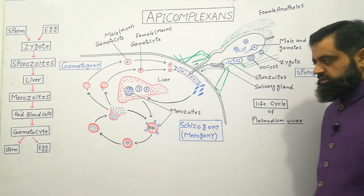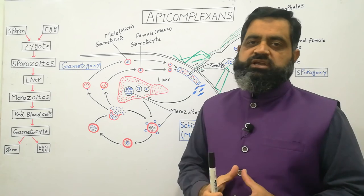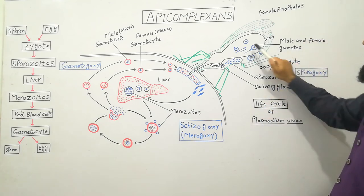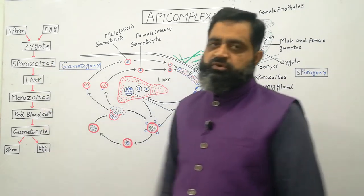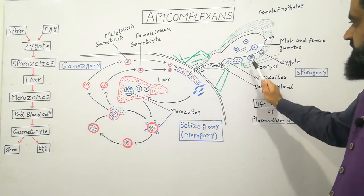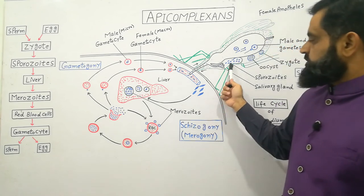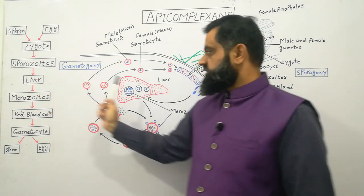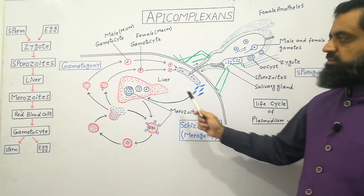To summarize the cycle: micro- and macro-gametes fuse with each other to form a zygote within the wall of the mosquito's stomach. The zygote then undergoes sporogony, during which many sporozoites are produced. As seen in the diagram, these sporozoites are transferred to the salivary glands. From the salivary glands, sporozoites enter the bloodstream of a healthy person, where they attack liver cells. In the liver cells, schizogony — also known as merogony — begins and many merozoites are produced.